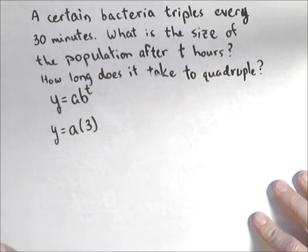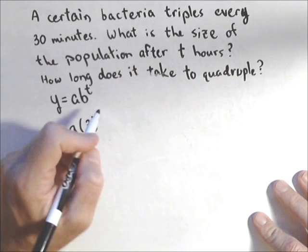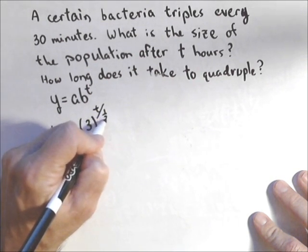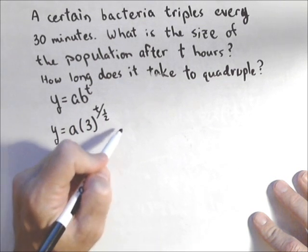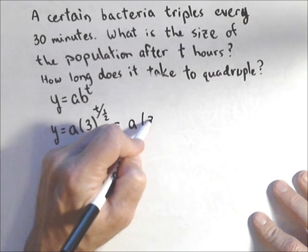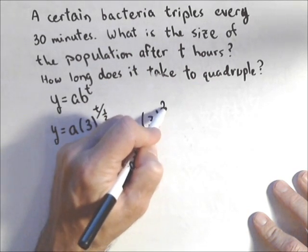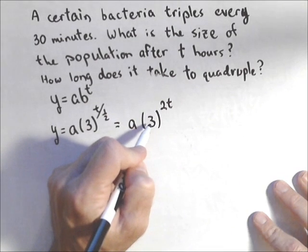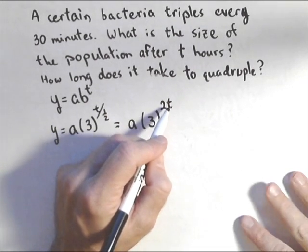It triples every 30 minutes, or every half hour. So I'm gonna do t divided by one half. Which we can rewrite as a times three to the two t. Because every half an hour, we wanna multiply by three. So it makes sense to have a two up there.